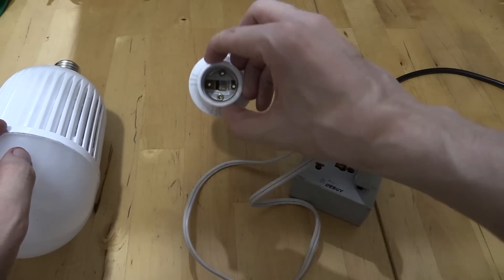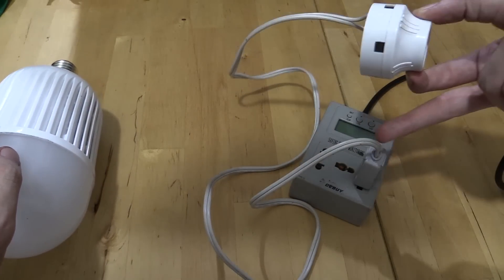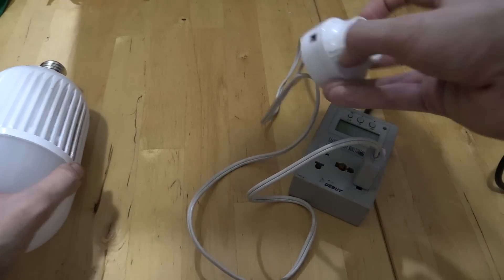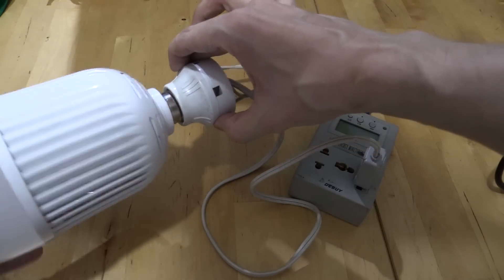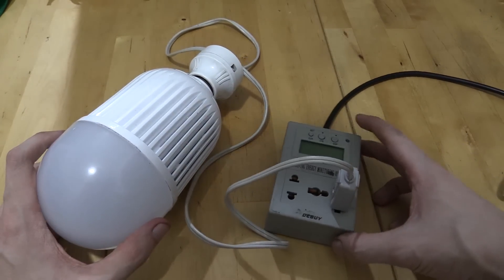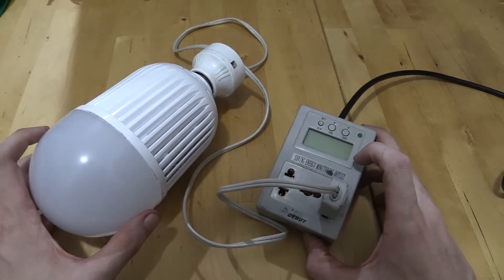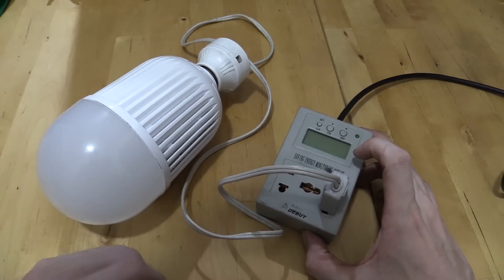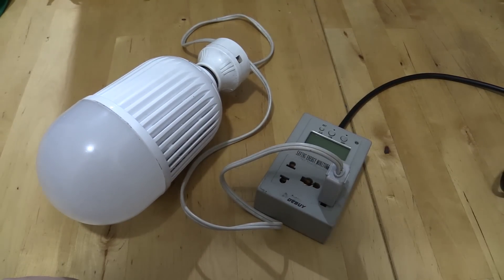So now I've wired up this bulb holder straight to a two-pin plug which goes into my wattmeter. So let's screw in the bulb and I'll turn on the wattmeter. Now since this does some averaging we're gonna have to leave it run for a minute or so to get an accurate reading. So let's turn it on.